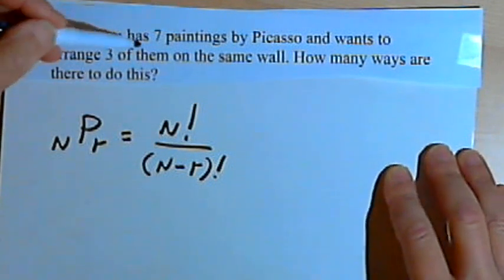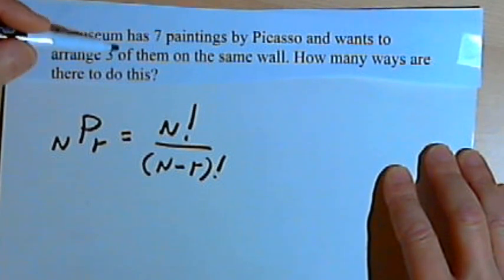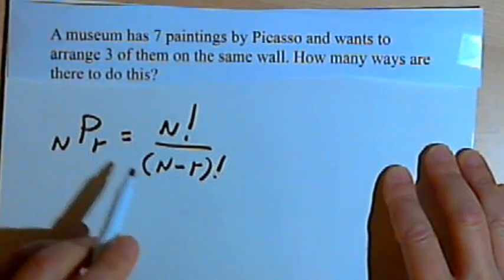We're using that because we have seven paintings, but we only want some of them. So that means we've got to use this formula.